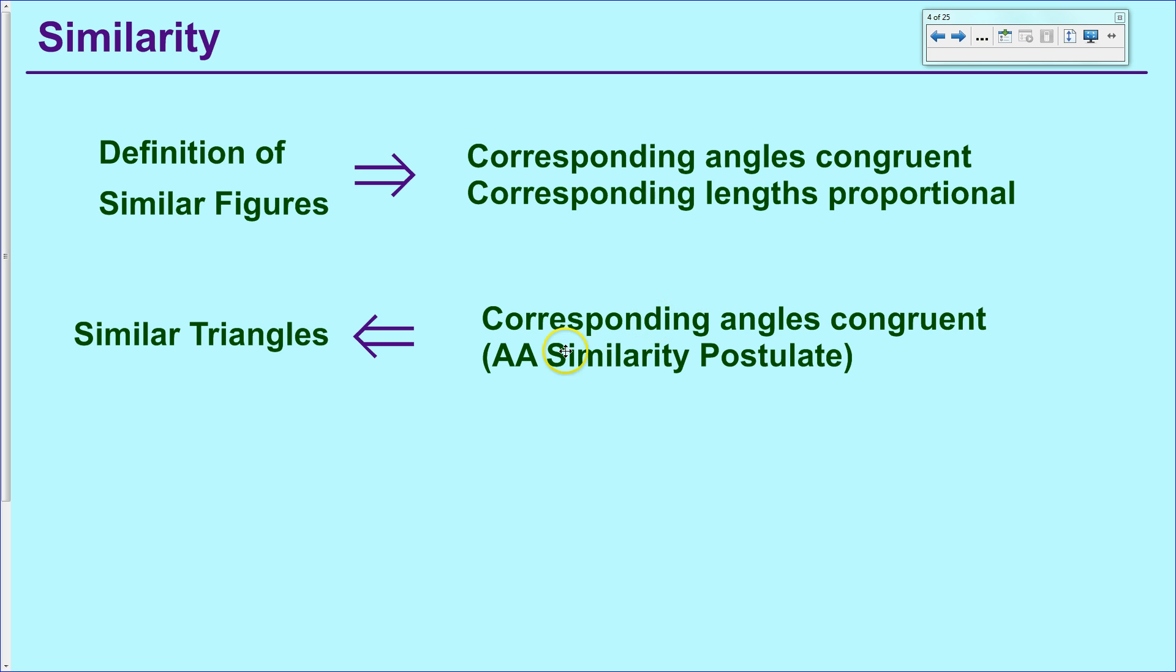And the first one that we had was the AA similarity postulate, which said that in a triangle, if you've got two angles that are congruent, then the two triangles are similar.